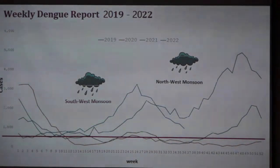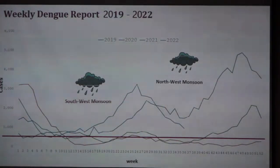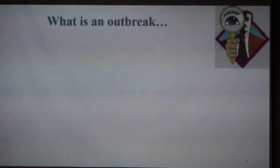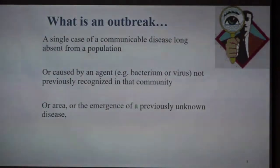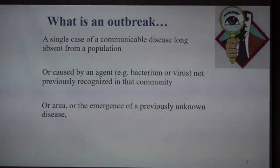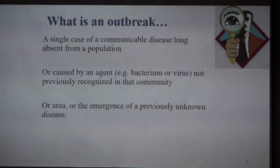You can see that dengue outbreaks are always related to the monsoon season during the year. Also, an outbreak is not always about huge numbers — sometimes for certain diseases, even a single case is considered an outbreak. If you consider malaria, we know malaria has been eliminated; I think from 2012, and we received the elimination certificate in 2016.